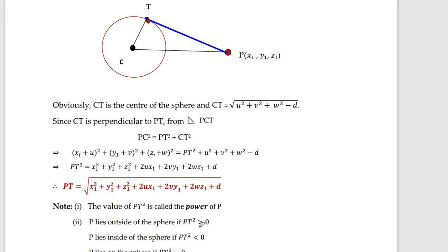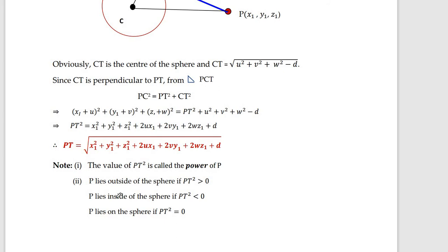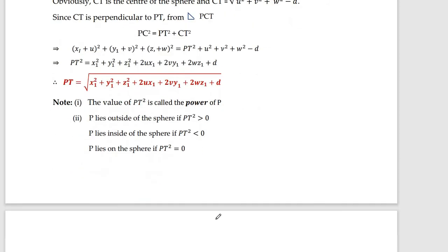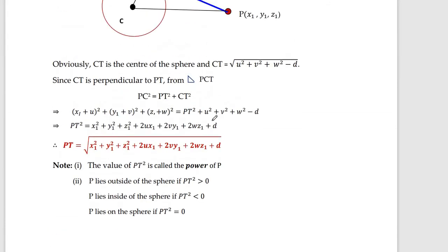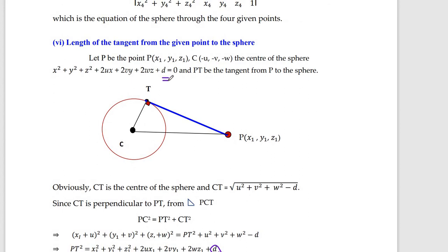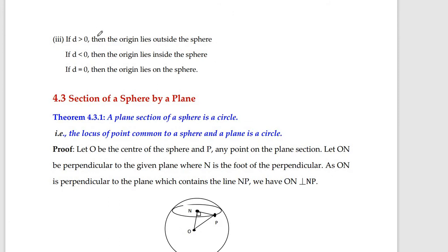If PT² is positive, then P lies outside the sphere. If PT² is negative, P lies inside the sphere. If PT² equals zero, P lies on the sphere. Similarly, using the constant d in the equation, if d is positive the origin lies outside the sphere; if d equals zero the origin lies on the sphere; and if d is negative the origin lies inside the sphere.